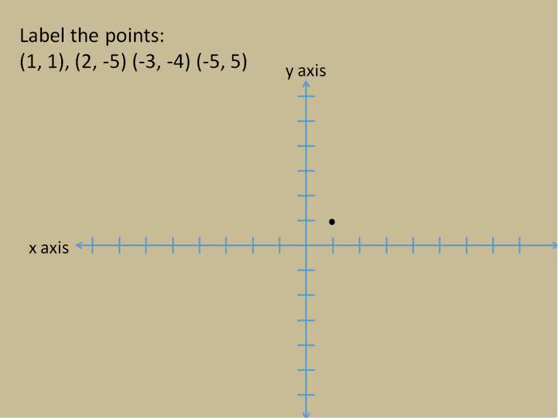The next point is (2, -5). We start at the origin and go two to the right, and then negative five — one, two, three, four, five — down. Our point would be right around there. So that would be the point positive two, negative five, right there. And then our third point, (-3, -4), is going to be in quadrant three.